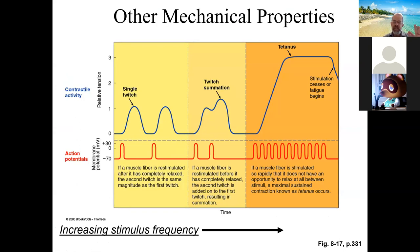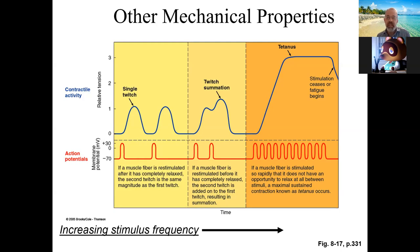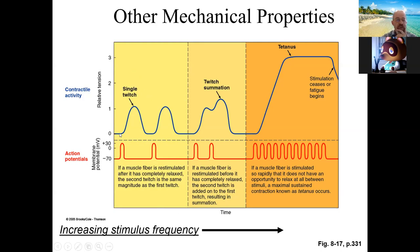What about increasing the stimulus frequency — not the strength, but how often the stimulus is given to the muscle? Looking at three examples: the red peaks represent the timing of a stimulus. In the first case, a stimulus generates a muscle contraction, and the muscle returns to rest before receiving a second stimulus and generating a second contraction. This is called a twitch — a contraction followed by complete relaxation.